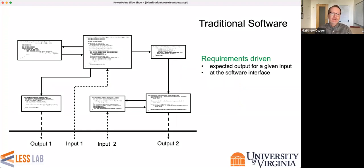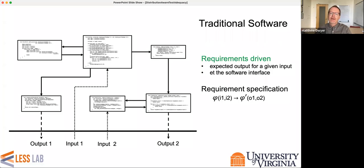Let's imagine we have a system with six components, all programmed by humans using traditional programming languages. The edges depict data and control flow amongst these components, and collectively they orchestrate a computation that takes two inputs and computes two outputs. Generally, when we think about these kinds of systems, we think their development is driven by a set of requirements — often specified informally — capturing the expectation of the output for a given input, typically described at the software interface.